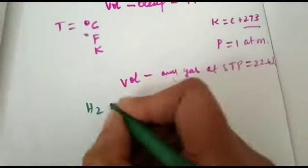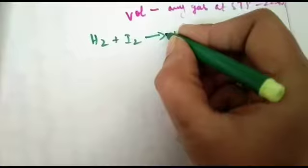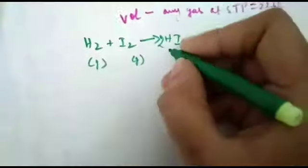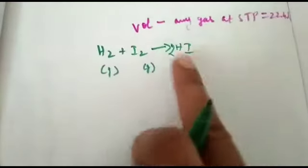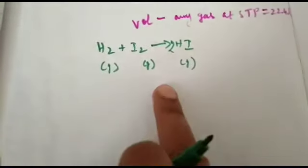Example: H2 plus I2 gives hydrogen iodide. Hydrogen is gas, iodine is also gas, hydrogen iodide is also gas. Molar volume is applicable only in the gaseous state, not solid and liquid.